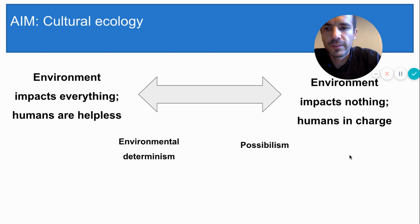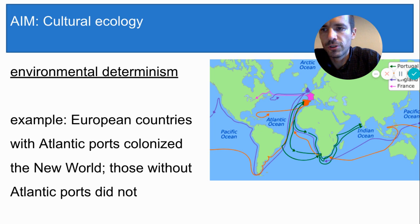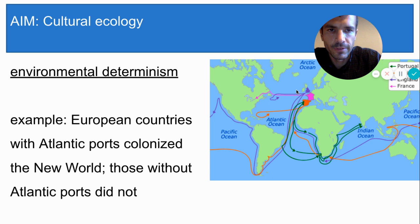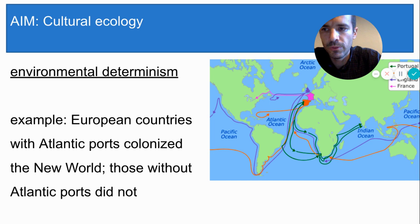Now let's look at some evidence for each theory. In his book Guns, Germs, and Steel, which looks at the role that geography played in the rise and fall of world powers, geographer Jared Diamond notes that all of the European countries that colonized the New World bordered the Atlantic Ocean. Diamond argues that their access to the ocean and their history of maritime trading was an important reason why those countries took over the New World and others did not. Indeed, no landlocked European countries had any colonies in the New World.